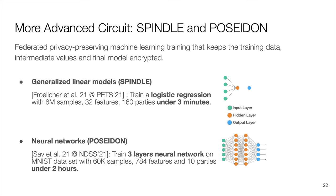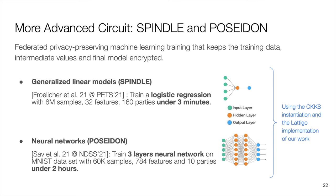The presented experiments represent simple functionalities that can be easily and fairly compared to our baseline systems. My colleagues have worked on applying the MHE-based MPC protocols to more complex machine learning training tasks. In the Spindle system, also presented at PETS this year, they train a logistic regression over 6 million samples distributed across 160 parties in under 3 minutes. In the Poseidon system, presented at NDSS this year, they train a 3-layer neural network on the MNIST dataset with 60,000 samples distributed across 10 parties in under 2 hours. Both these systems use the CKKS instantiation and Latigo implementation of our work.